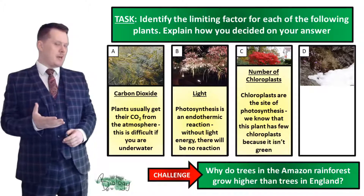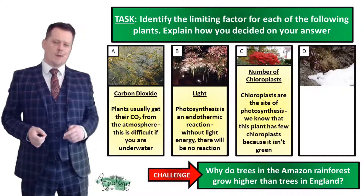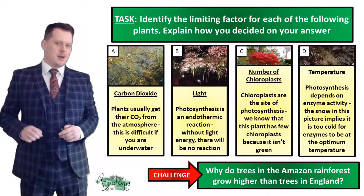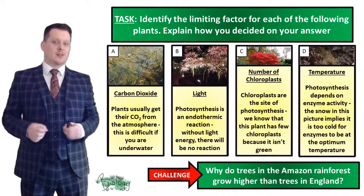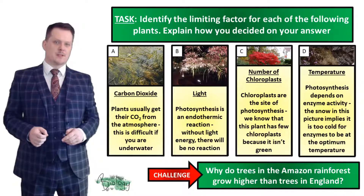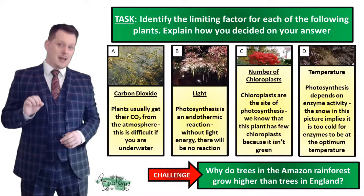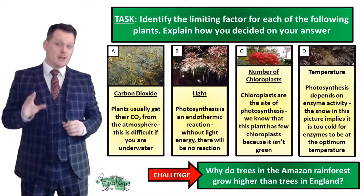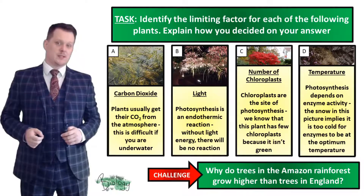So what's preventing plant D from photosynthesizing? Next to that plant we've got a bit of snow, which implies it's cold. Temperature is the factor affecting the rate of photosynthesis here. Remember photosynthesis is governed by enzymes — if it gets too cold the enzyme activity will decrease and the rate of reaction will decrease.